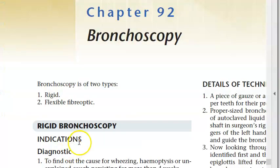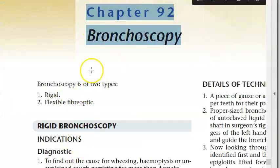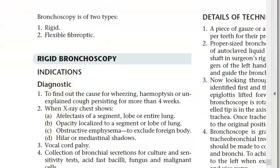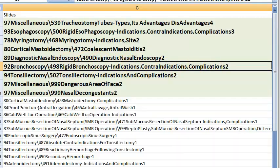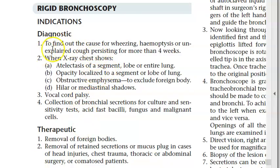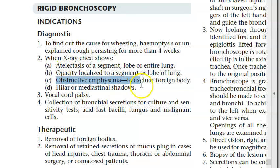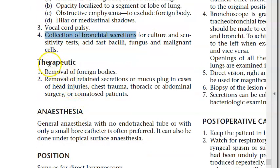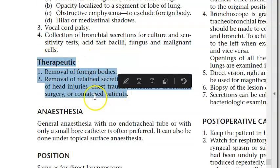Rigid bronchoscopy: indications include finding the cause of wheezing, haemoptysis, chest X-ray opacity, atelectasis, obstructive emphysema, hilar or mediastinal shadows, vocal cord palsy, collection of bronchial secretions; therapeutic use includes removal of foreign bodies and retained secretions.